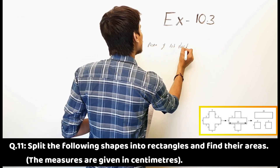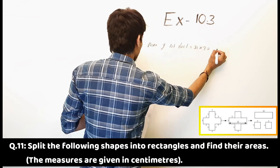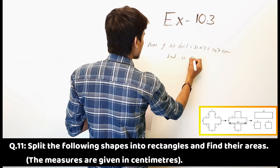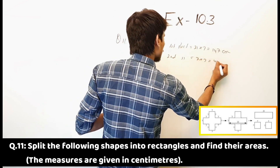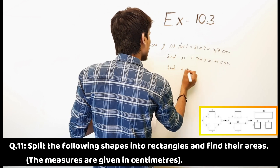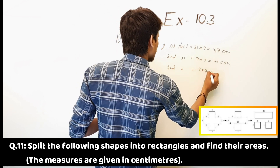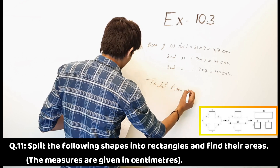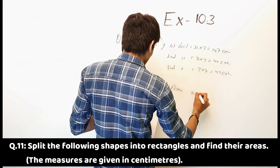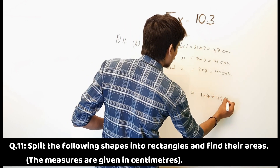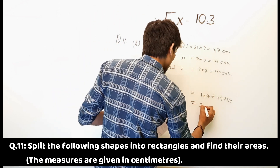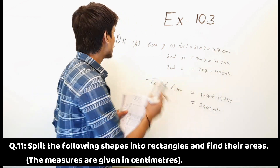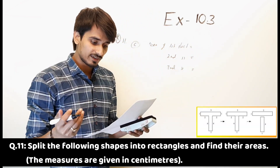Part B: area of first rectangle is equal to 21 multiplied by 7 is equal to 147 centimeter square. Second rectangle is equal to 7 multiplied by 7 is equal to 49 centimeter square. Third rectangle is also equal to 49 centimeter square. Total area is equal to 147 plus 49 plus 49 is equal to 245 centimeter square.